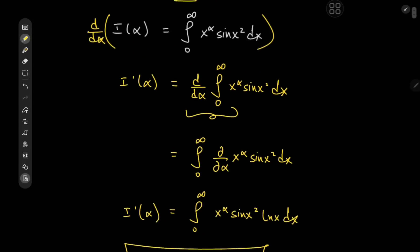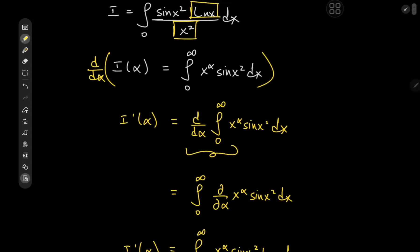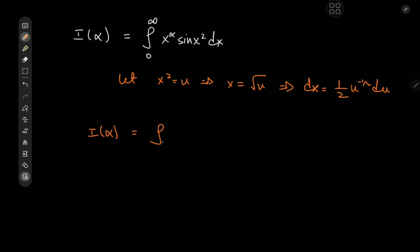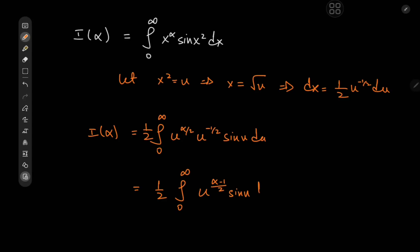Now the plan is to find a closed form for I(α), then differentiate and plug in the required value. To evaluate this integral, I'll let x² equal u, which implies x equals √u and dx equals one-half times u^(-1/2) du. The limits of integration are not altered. So we have I(α) equal to the integral from 0 to infinity of u^(α/2) times u^(-1/2) times sine(u) du times one-half, which simplifies to one-half times the integral from 0 to infinity of u^((α-1)/2) times sine(u) du.